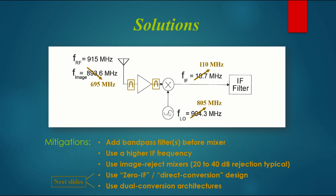If that's the case, then you probably want to use a higher IF frequency. Let's change the IF frequency from 10.7 to 110 MHz. If we do that, then we have to move the LO down to 805 MHz. And that pushes the image frequency down to 695 MHz. That makes the design of these filters much easier.